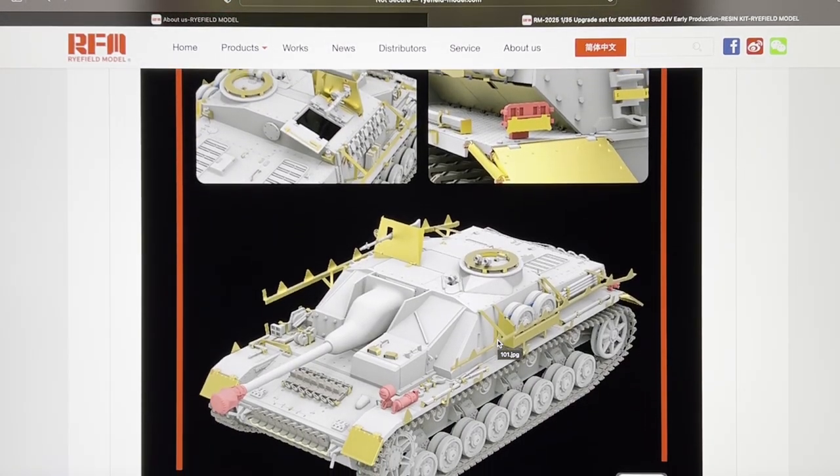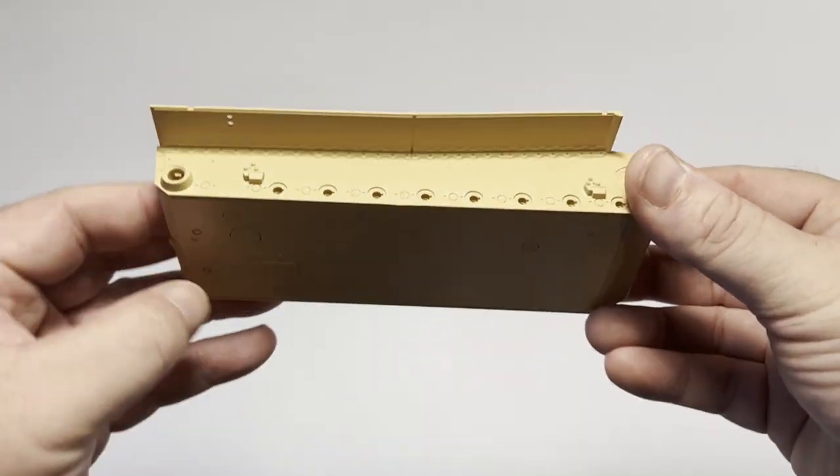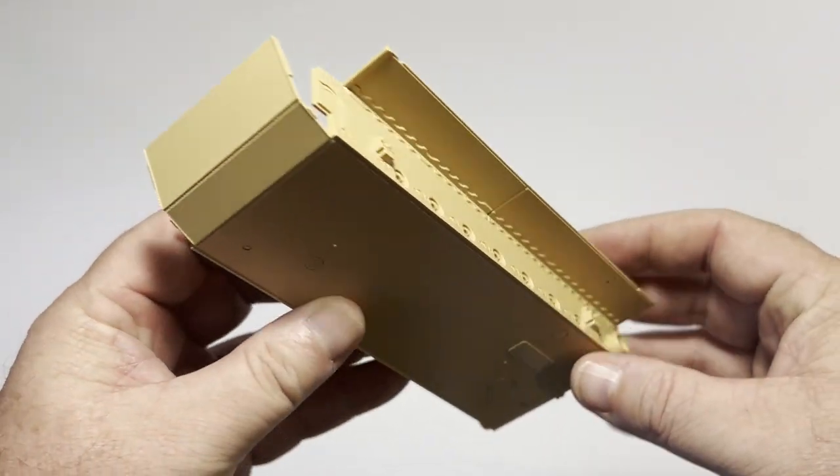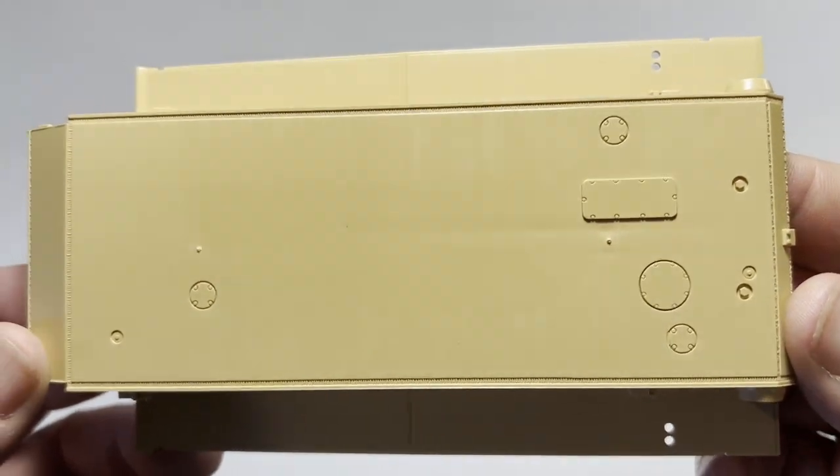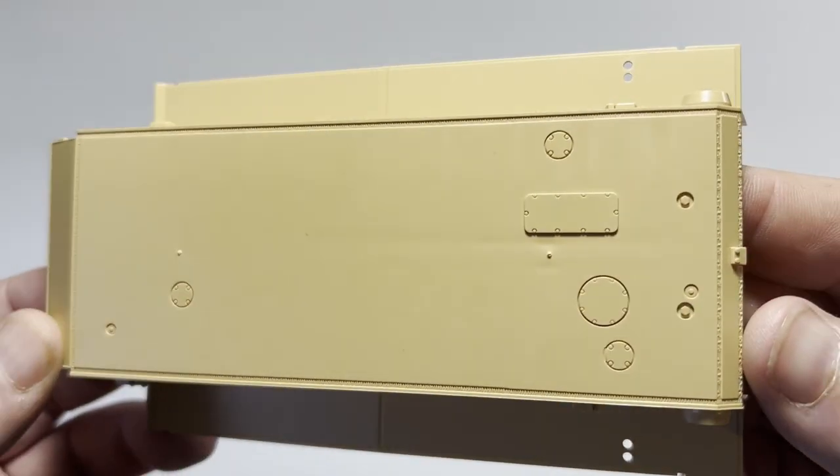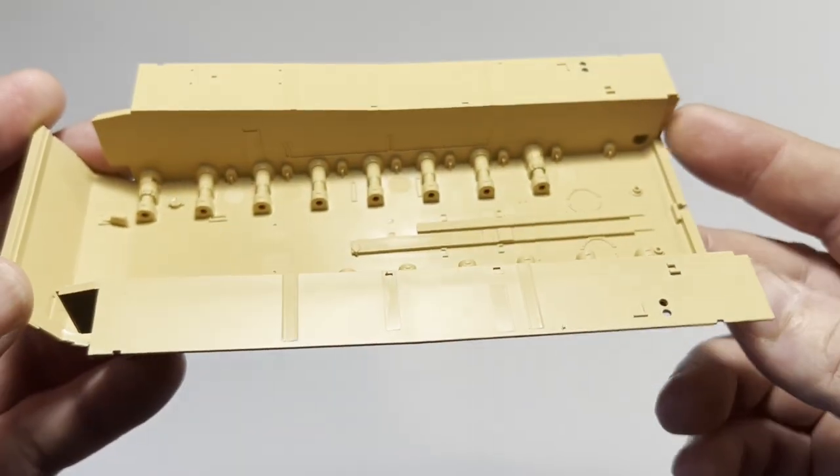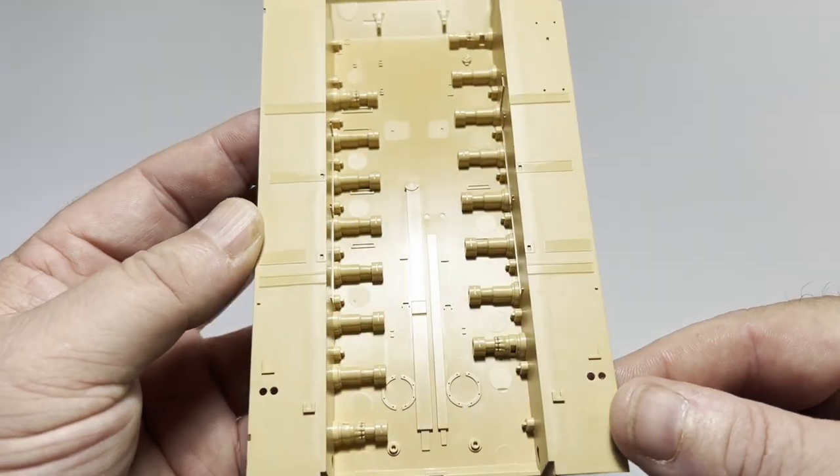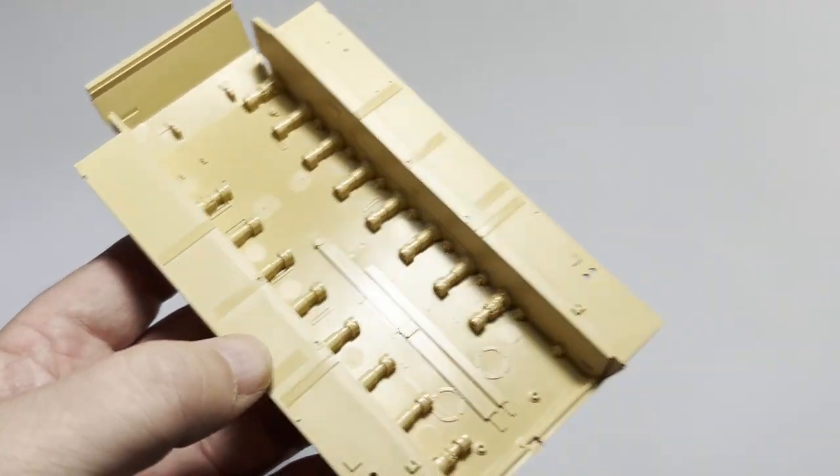So let's start with the hull. Ryefield uses the popular bathtub style hull construction which certainly improves stability and strength. The detail here is accurate and crisp. Features include two-piece lower sponson plates, weld seams, accurate side plates, internal hull features such as the torsion bar mounts, firewall and mortar shell rack mounting points. This level of detail is difficult to produce and Ryefield's done a superb job with this engineering.